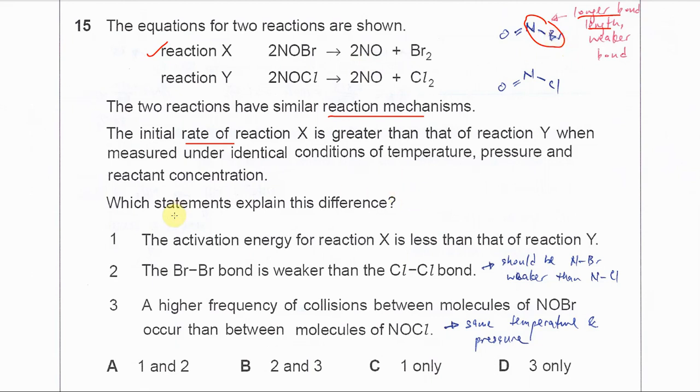Now which statement explains this difference? The first one: activation energy of X is less than Y. Because the NBr bond is weaker now, the energy needed is lesser. That's why activation energy is lesser than Y. So it's correct.